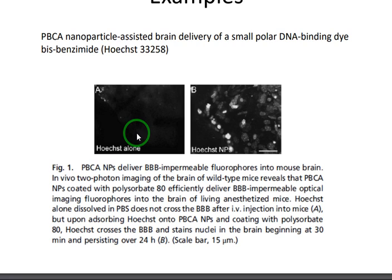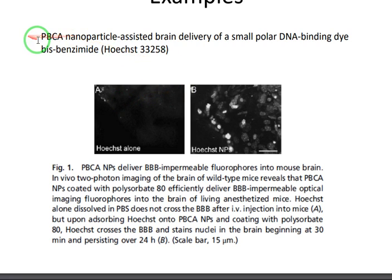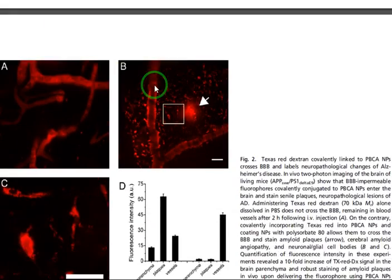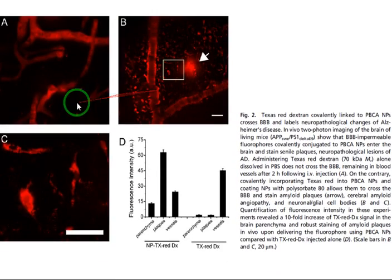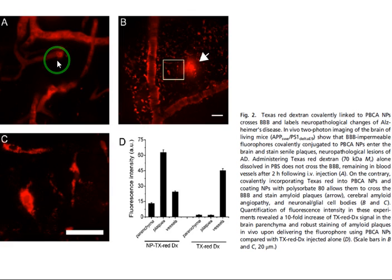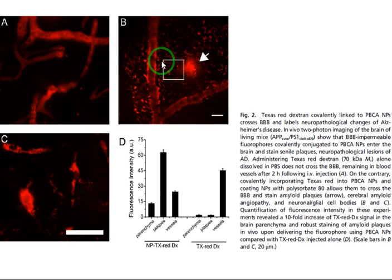This slide shows that if fluorophores are used alone into the mouse brain, they cannot cross the blood-brain barrier, but by using polybutyl cyanoacrylate nanoparticles, they can cross it. Similarly, when dextran — a type of polymer — is used alone, it cannot cross the blood-brain barrier, but with these nanoparticles it can be found within the brain tissue.